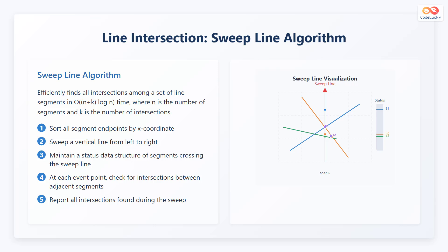First, sort all segment endpoints by X coordinate. Second, sweep a vertical line from left to right. Third, maintain a status data structure of segments crossing the sweep line. Fourth, at each event point, check for intersections between adjacent segments. Fifth, report all intersections found during the sweep.